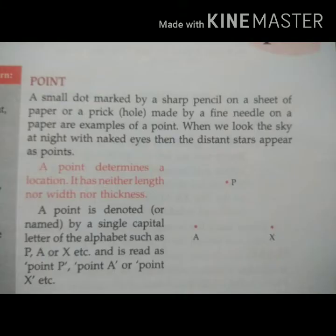Now the basic unit of geometry is a point. Point tells us the location of a place and it has no length or thickness.